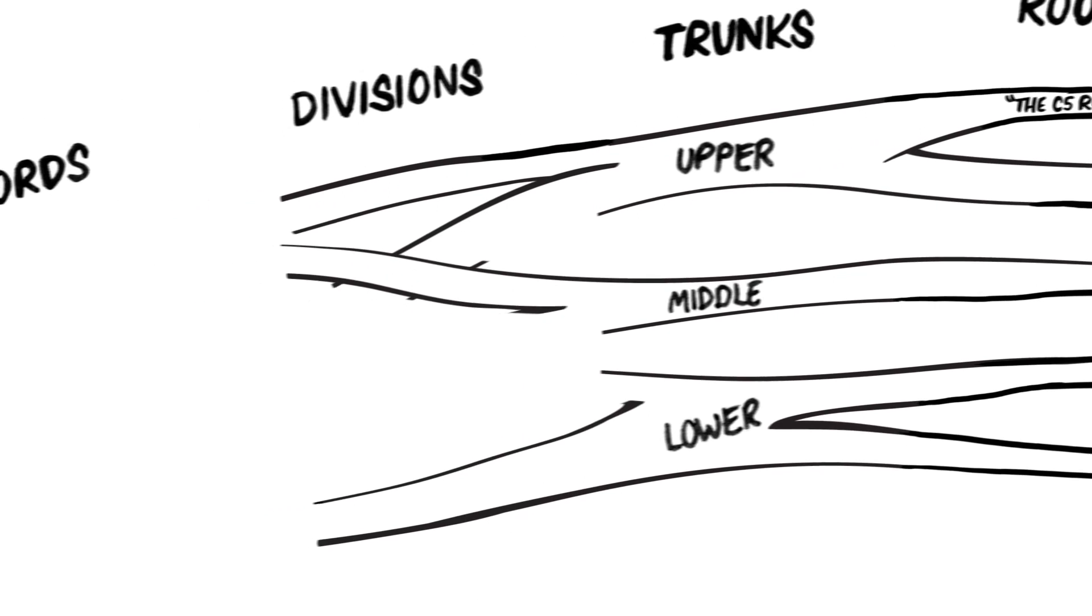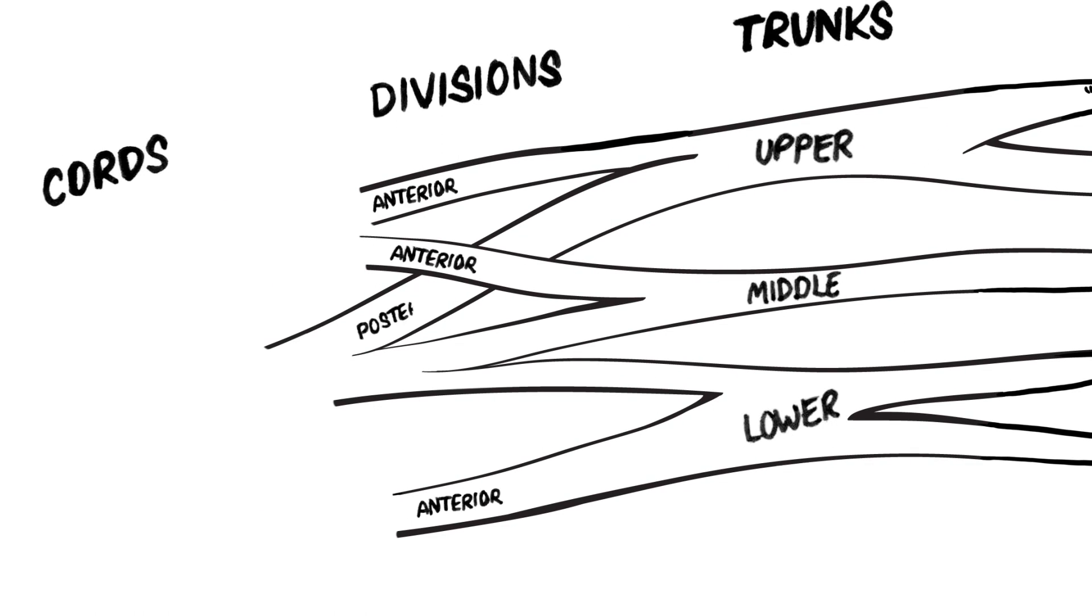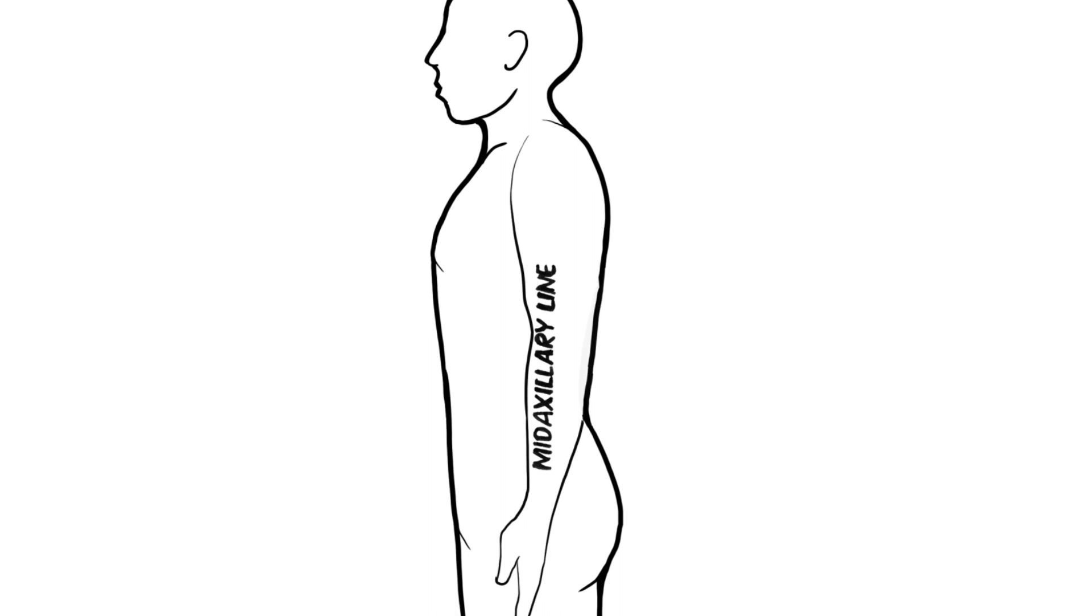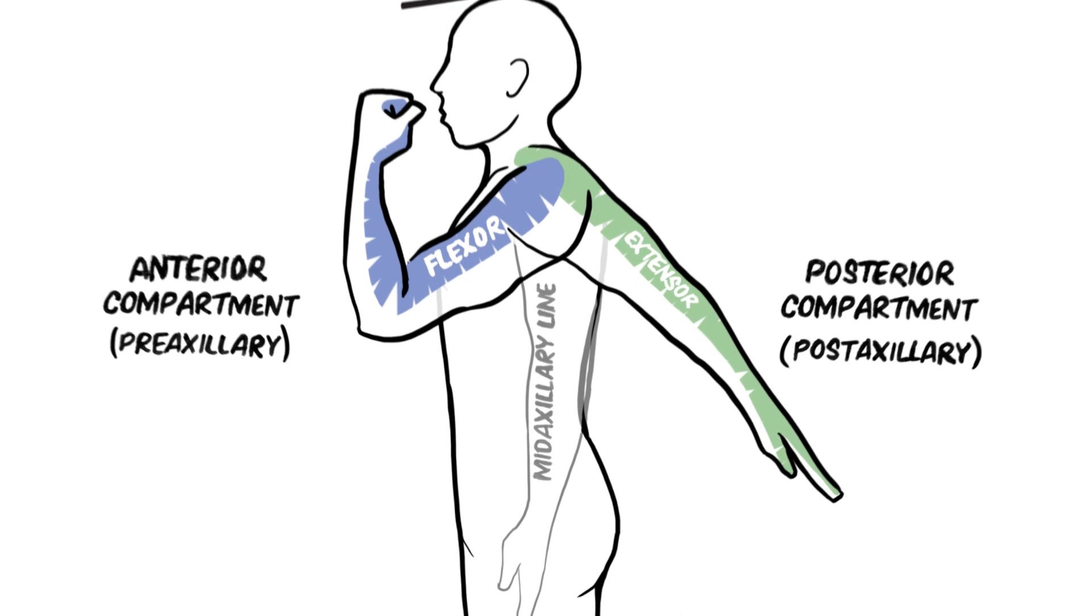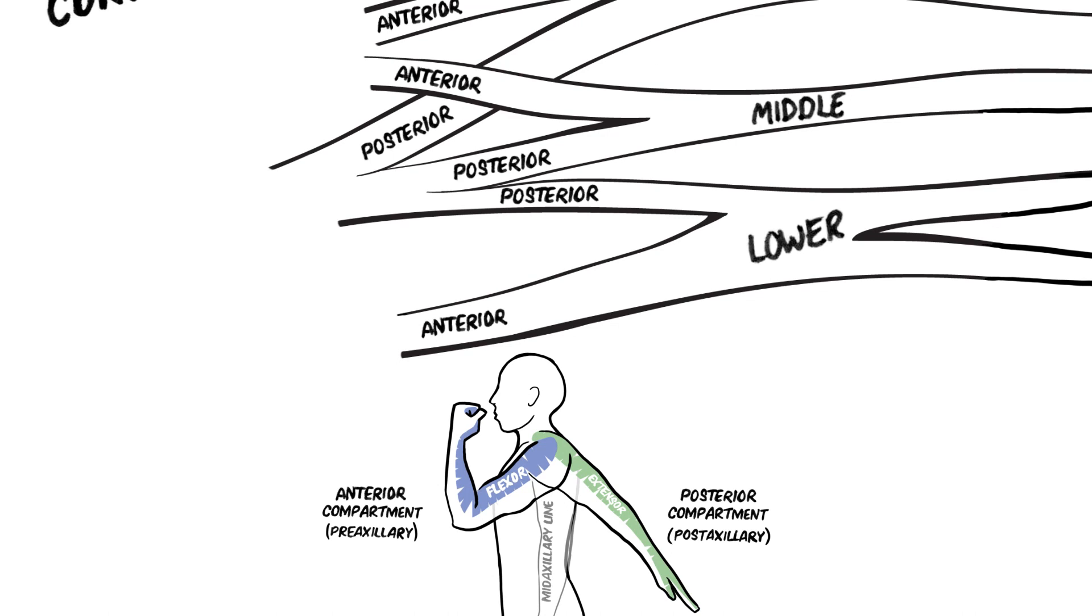Next, each trunk divides into an anterior division and a posterior division. This is the most important functional segregation that takes place in the brachial plexus, because all of the fibers in the anterior division will innervate anterior compartment muscles, while all of the fibers in the posterior division will innervate posterior compartment muscles. In the anatomical position, the arm can be divided by a midaxillary line into an anterior compartment and a posterior compartment. These are also called preaxillary and postaxillary compartments, or flexor and extensor compartments.